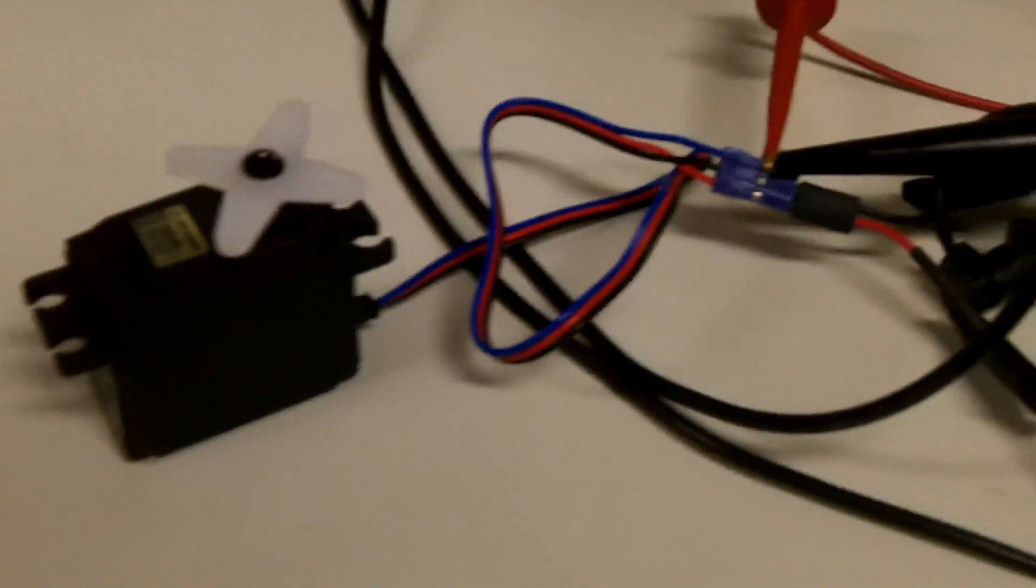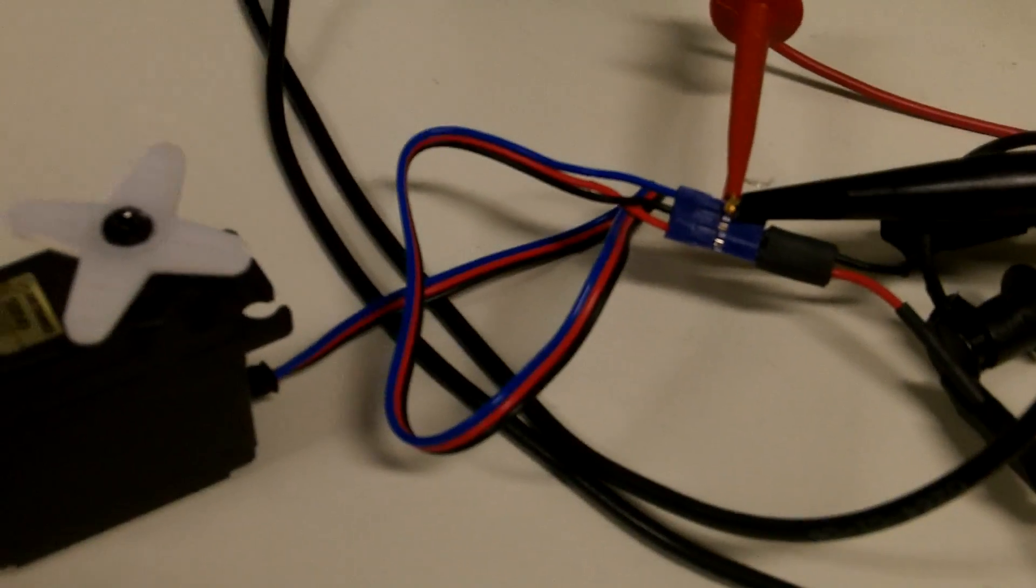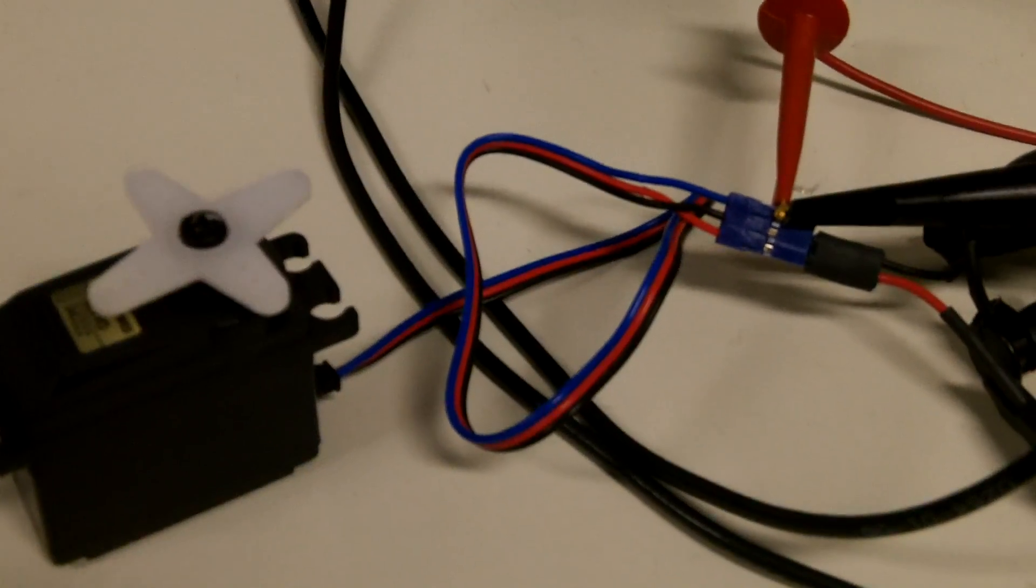So what I have here is a general servo. I've got a positive line, a ground line, and a signal line that is controlled by a pulse width.